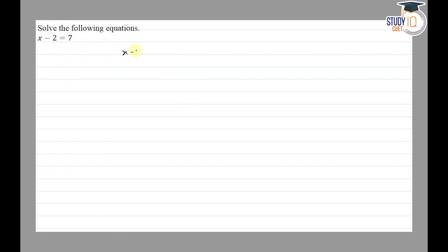x minus 2 is equal to 7. We shift the 2 to the other side, and its sign changes, so x equals 7 plus 2. Therefore, x is equal to 9. Thank you.